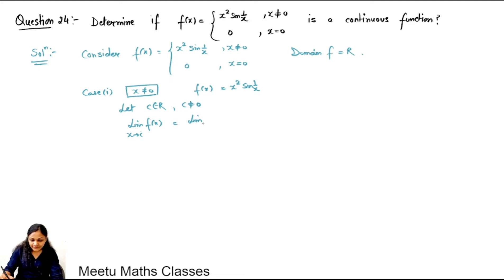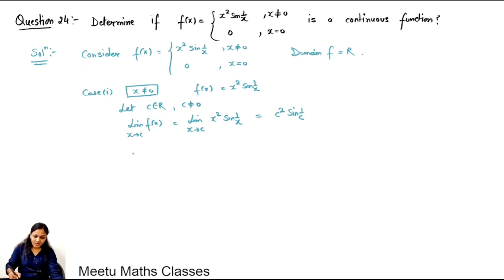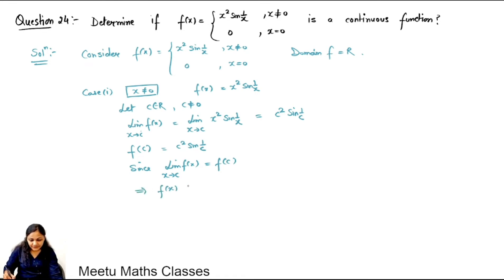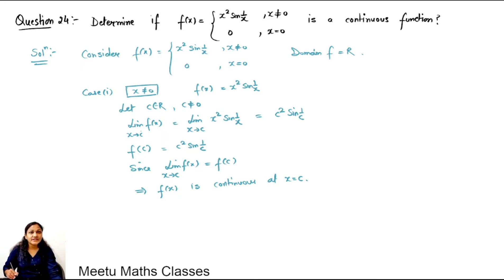By direct substitution, the limiting value is c squared times sin(1/c), which is a finite quantity. The exact value of the function at x equals c is also c squared times sin(1/c) by direct substitution. Since the limiting value equals the exact value, f(x) is continuous at x equals c. Since c was an arbitrary real number, f(x) is continuous for all x not equal to 0.